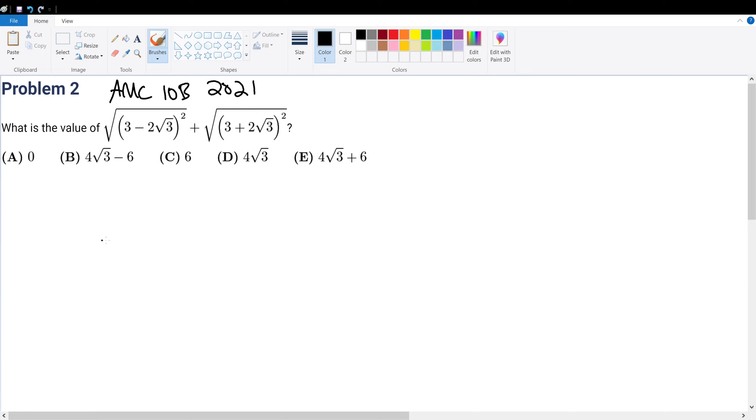So first of all, what does it mean for square root of a squared? Well, that is equal to a, but on itself it looks simple. But when it gets to the positive negatives, it gets a little tricky. So if a itself is less than zero, then...